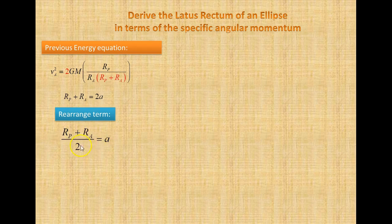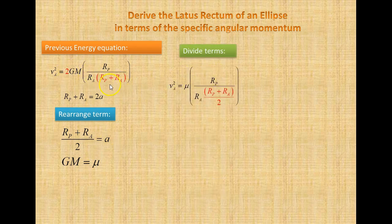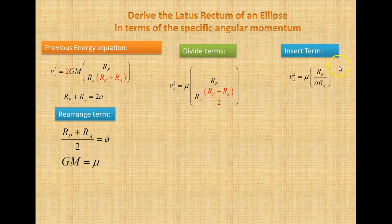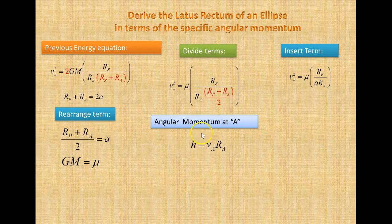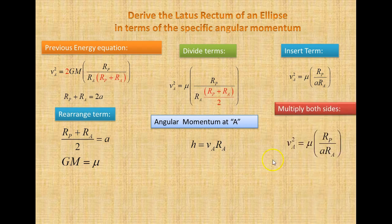We invert and multiply, canceling terms. Then since Rp plus Ra equals 2A, we bring the 2 down. Rearranging and dividing through by 2, A equals (Rp plus Ra) divided by 2. We also set GM equal to mu. Taking the 2 and making a fraction, Rp plus Ra divided by 2 equals A. So we have mu times Rp times A times Ra. Our specific angular momentum at A is VA times Ra, and we multiply both sides by Ra squared.